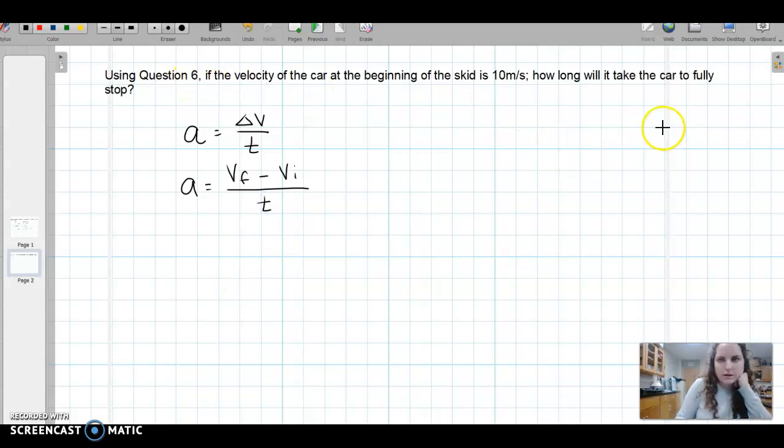In this question we are asked how long will it take, so we are asked for the time. We know that our acceleration is equal to one meter per second squared, or more like our deceleration, right? Because it's a frictional force so it's slowing us down. We also know that the velocity of the car at the beginning of the skid was 10 meters per second, so that would be 10 meters per second. We want the car to fully stop, and if we're stopping we're at rest and the final velocity is zero meters per second.